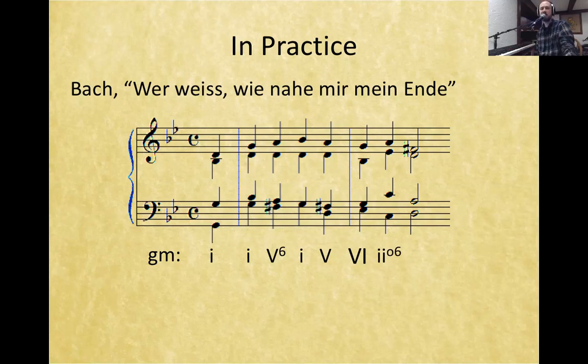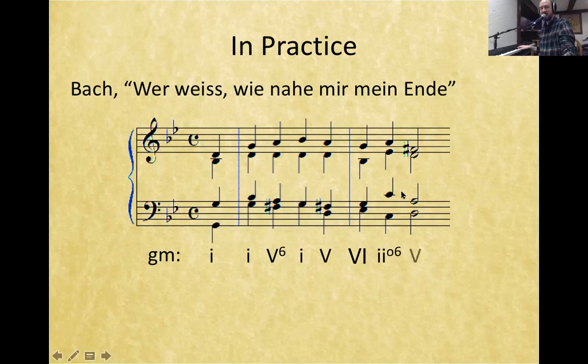We then land on a five chord — D, F-sharp, A — in root position. That's a practical example of applying Roman numerals and figured bass symbols together in a musical context. You can see how full a picture they give us of what's going on harmonically.